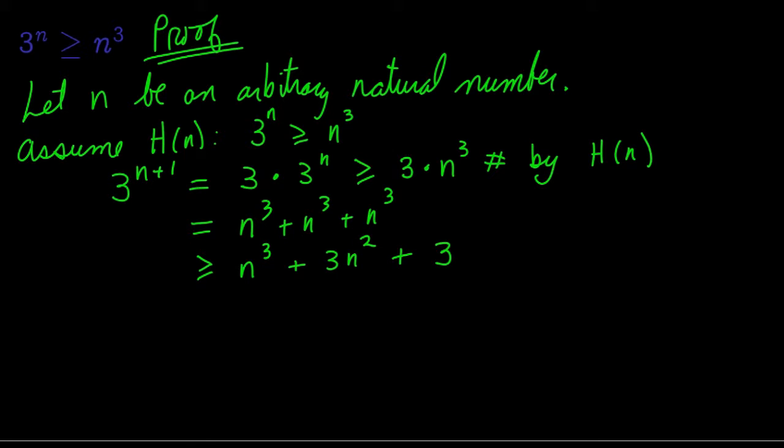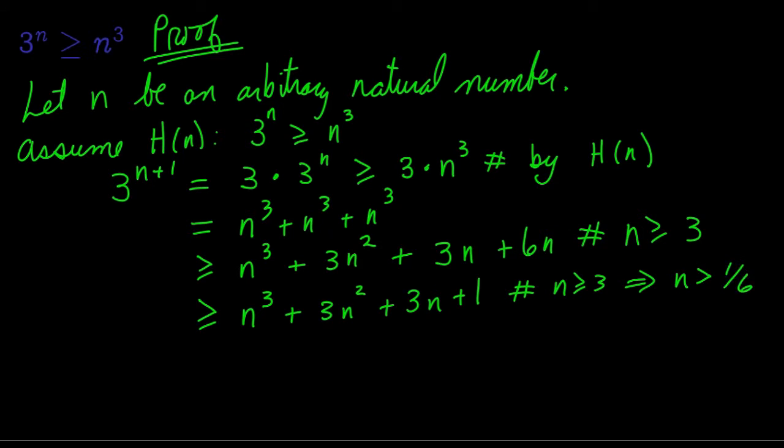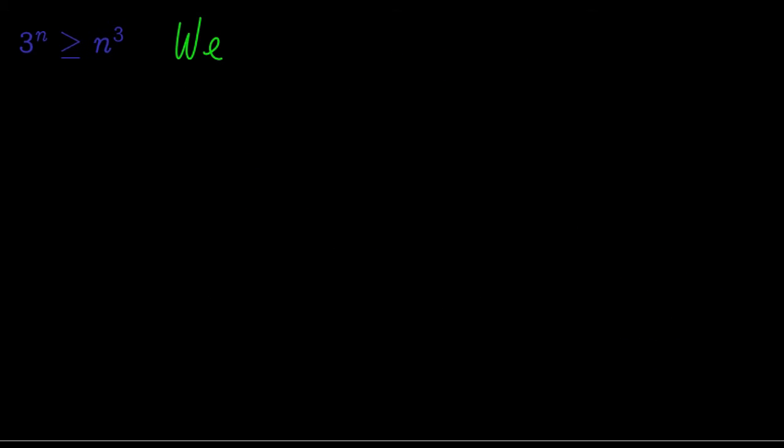We start to rearrange that. Now we use an extra assumption that n is at least 3. And that allows us to rewrite things in such a way that if we factor it, we've shown that it's all greater than or equal to n plus 1 cubed.